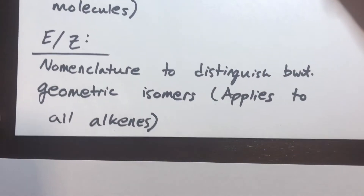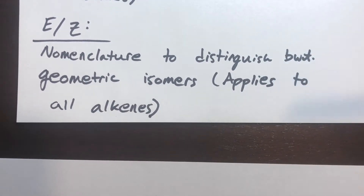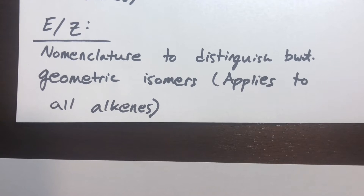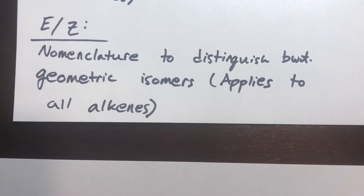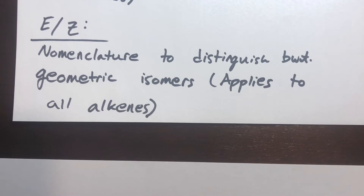Lastly, we have our E and Z nomenclature. This is very similar to cis and trans, except it applies to all alkenes. It was invented because the cis and trans nomenclature is only consistent with some of the more simple molecules that have the same types of substitution patterns. E and Z applies to any number of substitutions, so you could use E and Z exclusively. But you may still see cis and trans in certain situations, so you need to understand both and how to apply them.